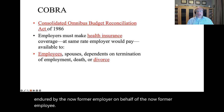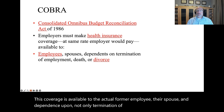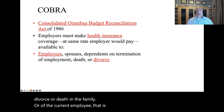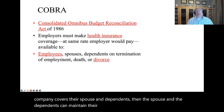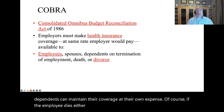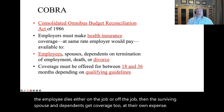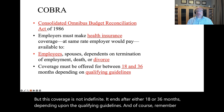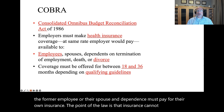This coverage is available to the actual former employee, their spouse, and dependents upon not only termination of employment, but upon divorce or death of the current employee. If an employee gets divorced and the company covers their spouse and dependents, the spouse and dependents can maintain their coverage at their own expense. If the employee dies either on or off the job, the surviving spouse and dependents get coverage too, at their own expense. But this coverage is not indefinite — it ends after either 18 or 36 months, depending upon the qualifying guidelines.